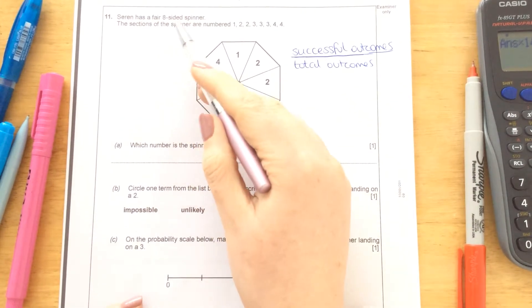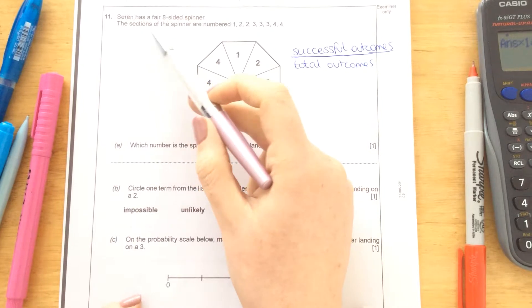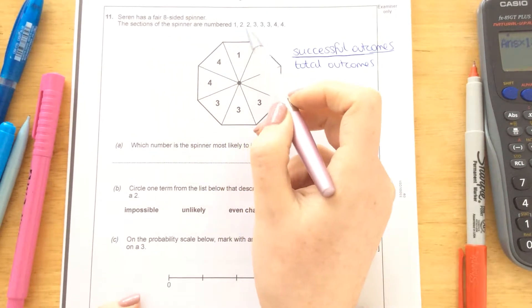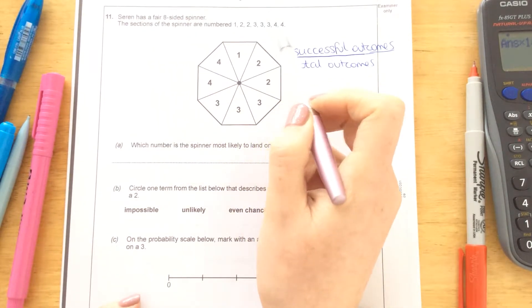Question 11. Saren has a fair eight-sided spinner. The sections of the spinner are numbered 1, 2, 2, 3, 3, 3, 4, 4.